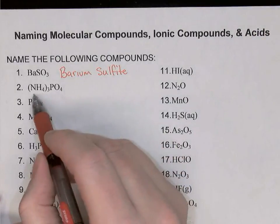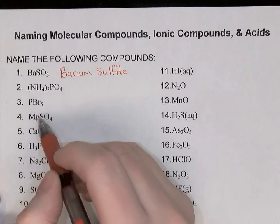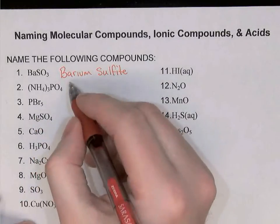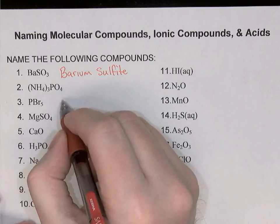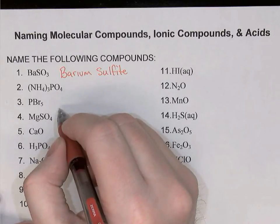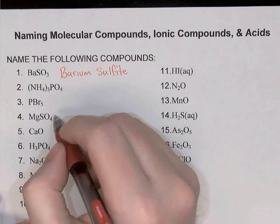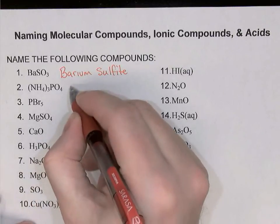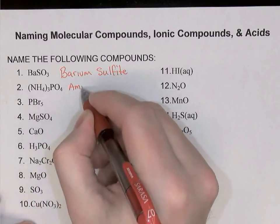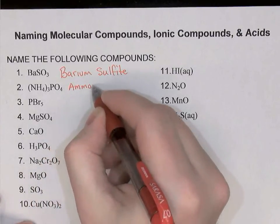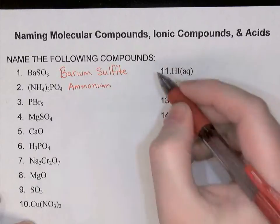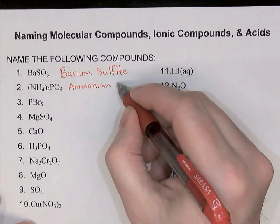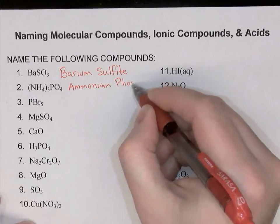The second question starts with ammonium, which is a complex cation, so therefore this is an ionic compound. Name the cation followed by the anion: ammonium. And PO4 I recognize as a complex ion — it's phosphate.